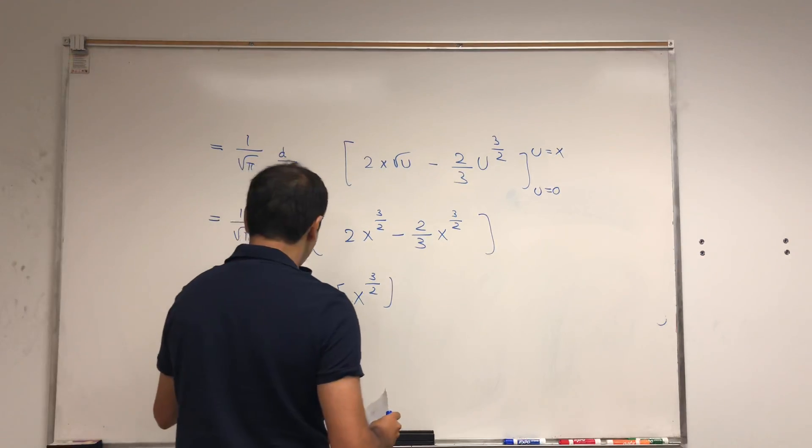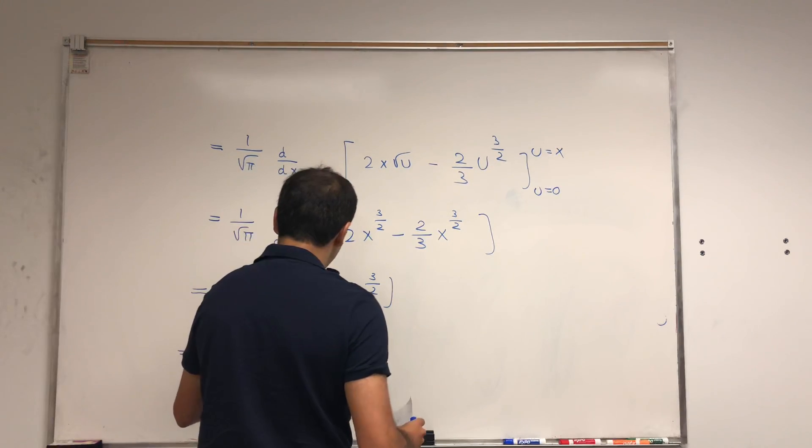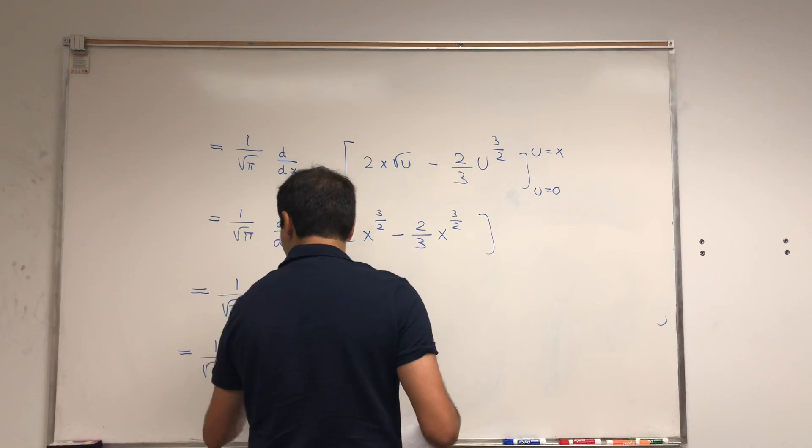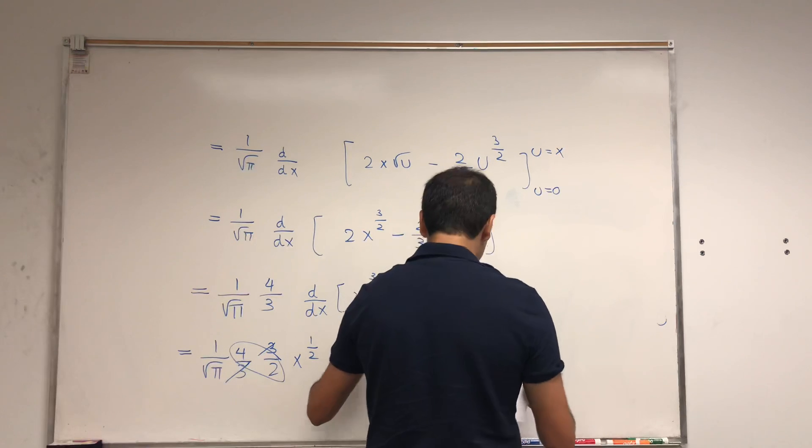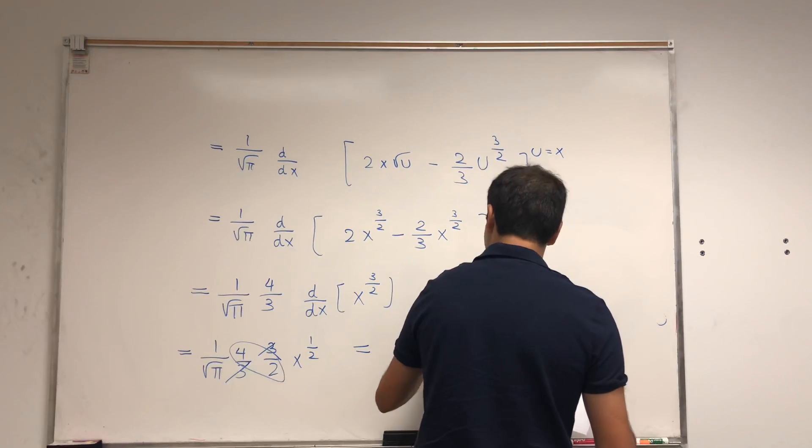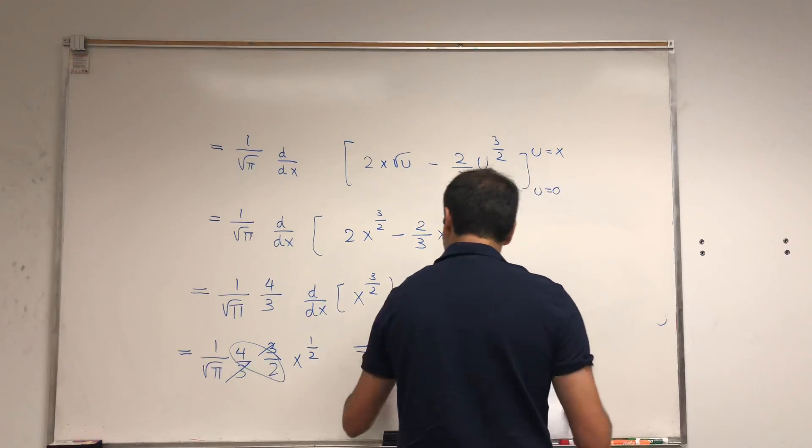So it's four thirds times three halves, x to the one half. And this simplifies: the three simplifies, the four over two is two. So you get two over square root of pi, square root of x.